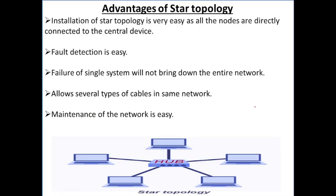Now, advantages of star topology: installation of star topology is very easy as all the nodes are directly connected to the central device. Fault detection is easy — iske andar fault detect karna bhoat easy hai. Failure of a single system will not bring down the entire network. Star topology mein aap bhoat sari types ke cables use kar sakte ho, like coaxial cable, twisted pair cable. Maintenance of the network is also easy.